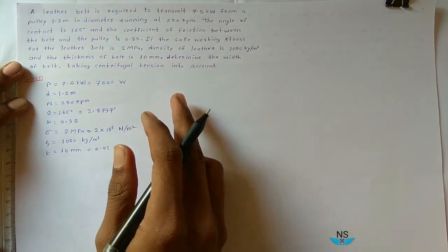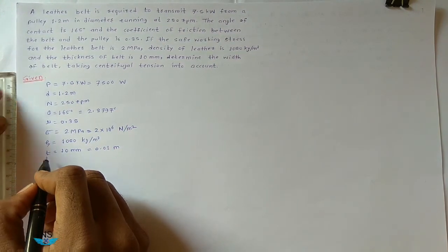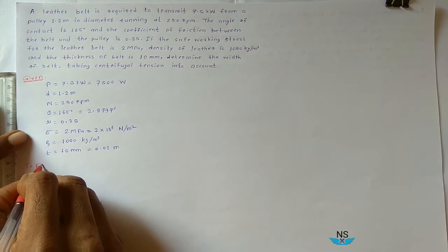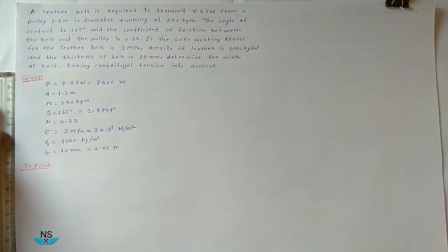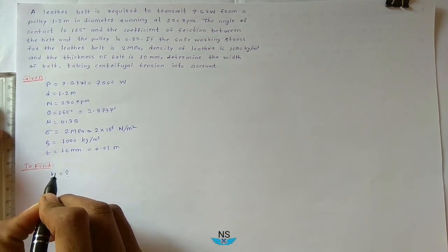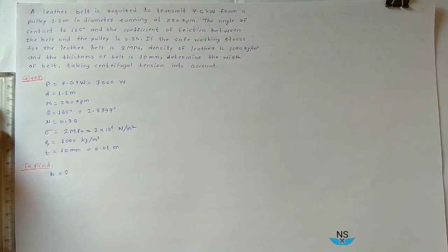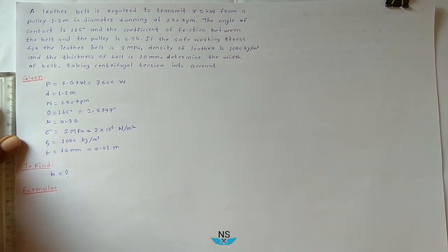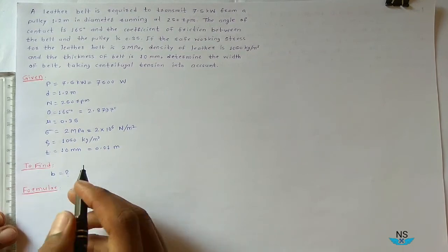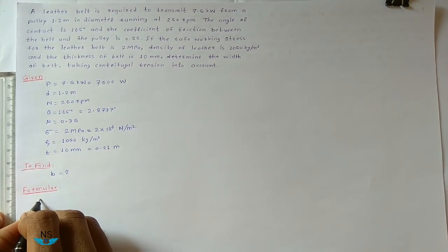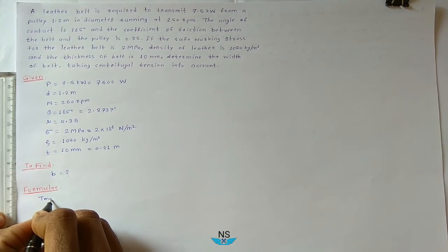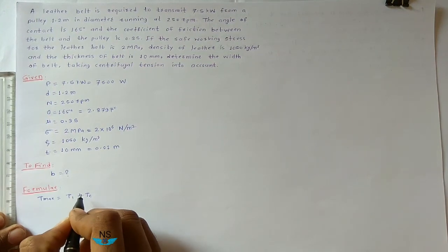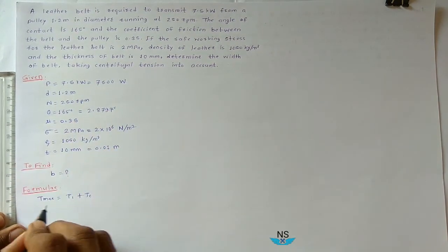We need to determine the width of the belt, B, taking centrifugal tension into account. The formula required is: T max is equal to T1 plus Tc, so we have to consider Tc also.